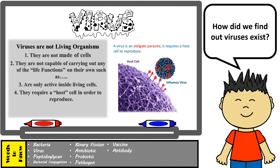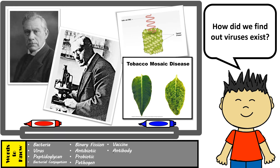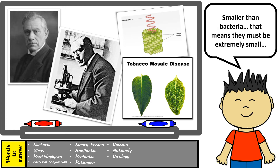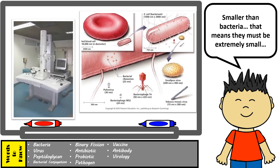In 1898, a Dutch scientist used filtration experiments to prove that an agent smaller than a bacteria was actually causing tobacco mosaic disease, which affects numerous plants. He was the first to name these incredibly small particles as viruses, which led him to become known as the founder of virology — the study of viruses. Viruses are much smaller than bacteria, so you can imagine how small that must be if bacteria are already much smaller than eukaryotic cells. Viruses are so small that they can only be seen with a special, powerful microscope called an electron microscope.